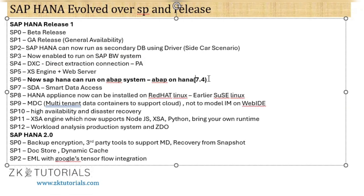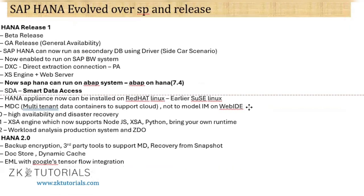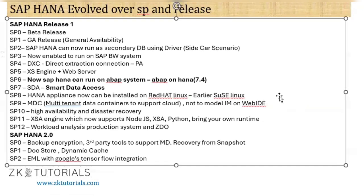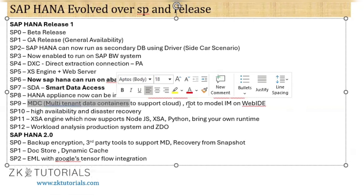SP7 introduced SDA — Smart Data Access. SP8 made it possible to install HANA appliance on Red Hat Linux. SP9 introduced the concept of MDC — Multitenant Data Containers — to support cloud scenarios. MDC is like Uber Pool: if purchasing a HANA box is very expensive for a small company, you can share the HANA instance with other companies. That is the Multi-Tenant Data Containers concept in HANA, introduced with SP9.